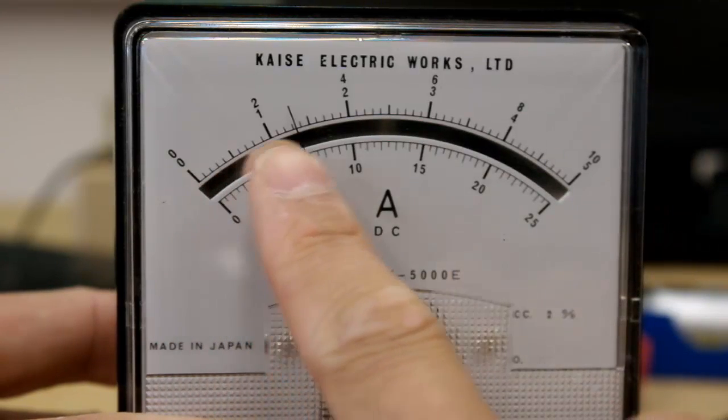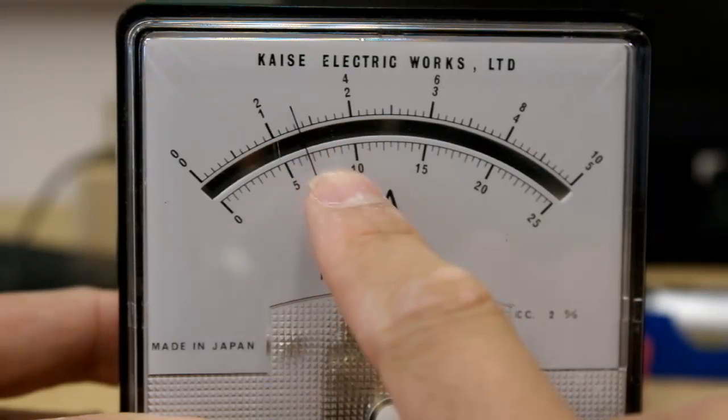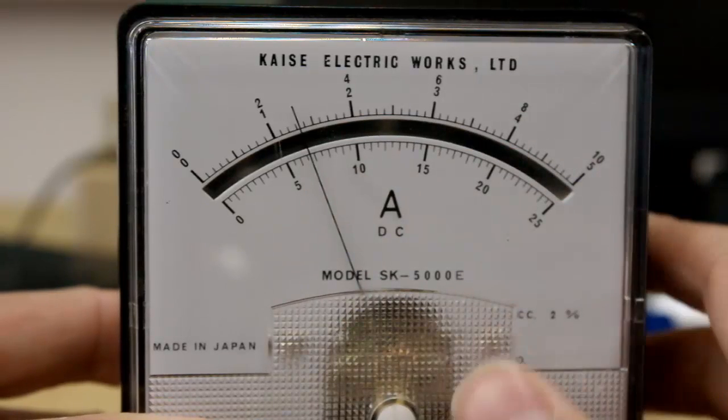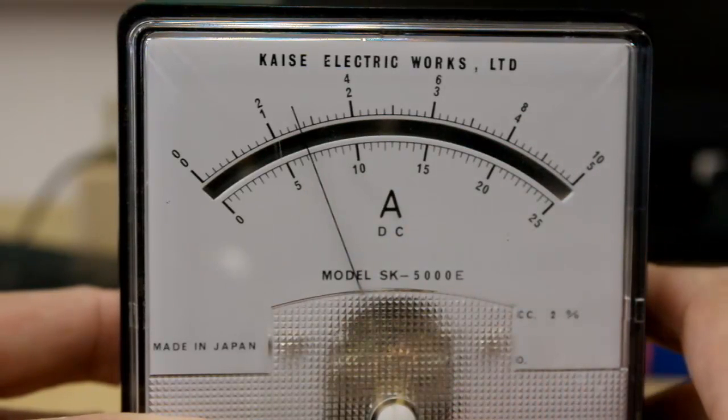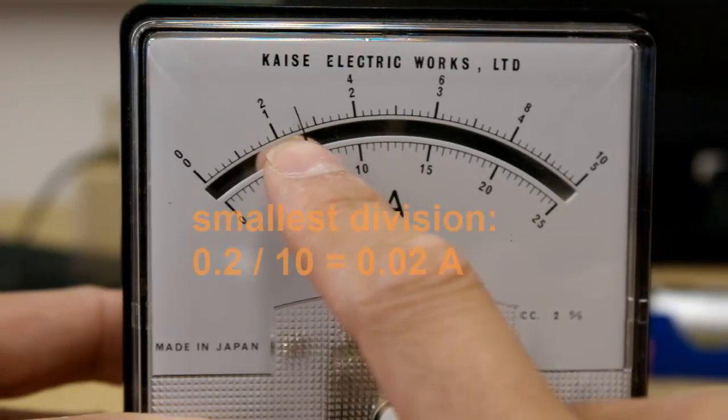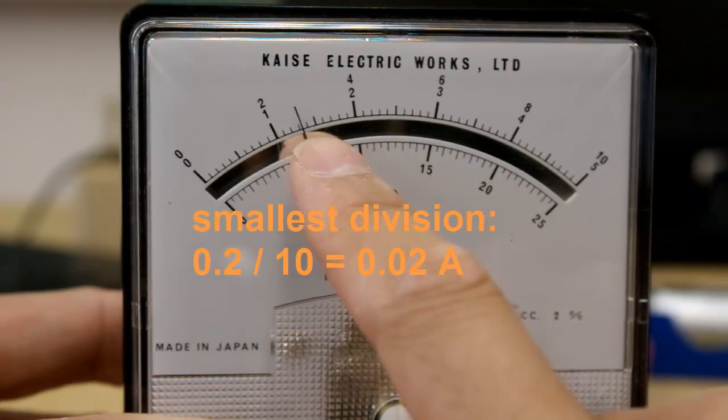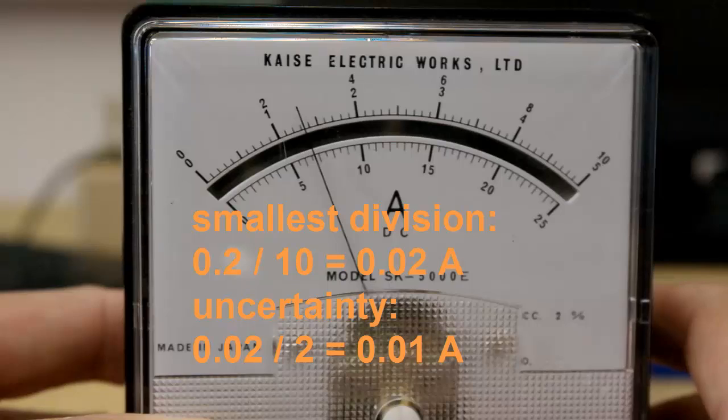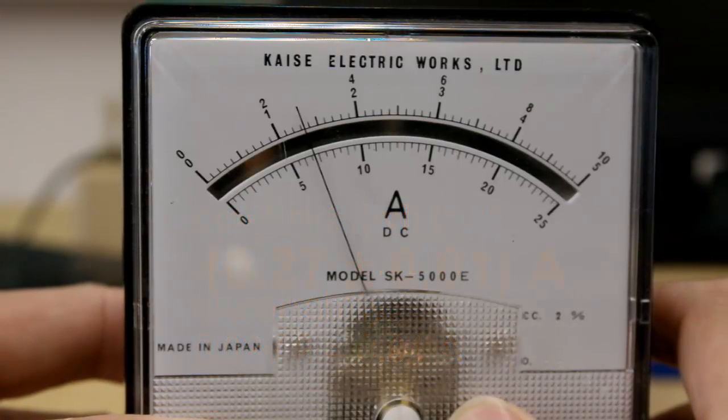In terms of uncertainty, you can see the needle is very, very stable, so we can probably go with half the smallest division. Therefore, what is the smallest division? Each small division, as we say, was 0.2 divided by 10, so it's 0.02, and half of that is going to give us 0.01. So, the overall reading of this is going to be 0.27 plus or minus 0.01 amps.